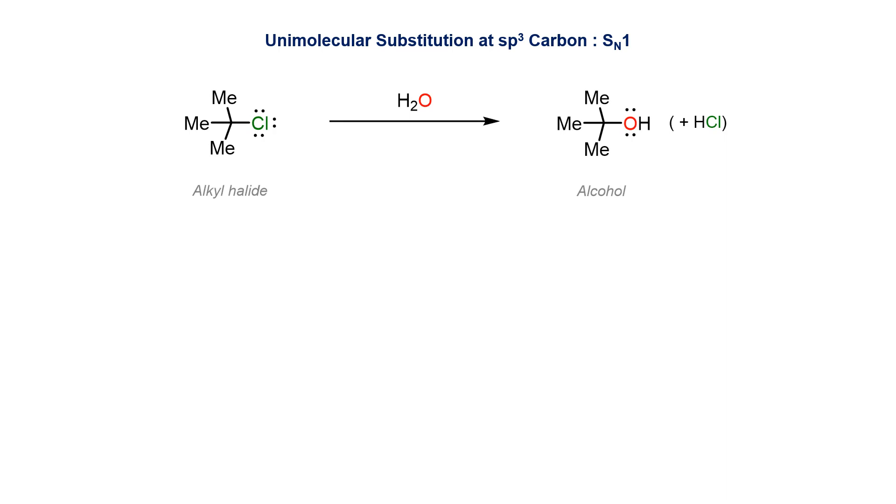In summary, a solvolysis reaction occurs when a secondary or tertiary alkyl halide is exposed to a polar solvent such as water. The solvent promotes loss of the leaving group to form the carbocation in the rate determining step and then behaves as a nucleophile to give, ultimately, the alcohol substitution product.